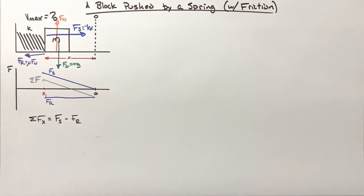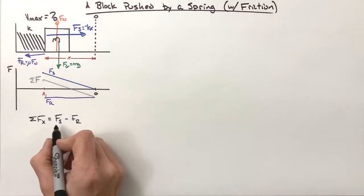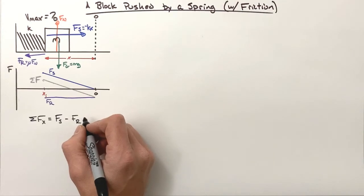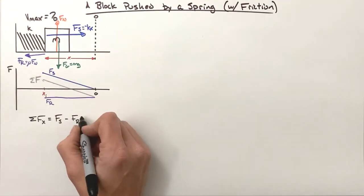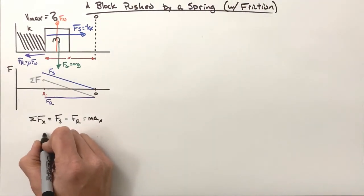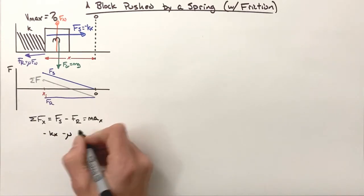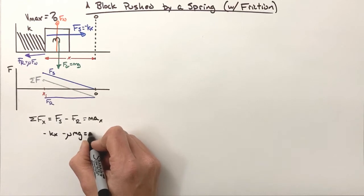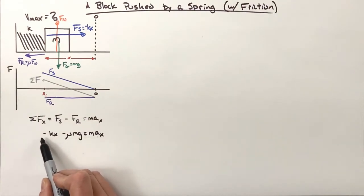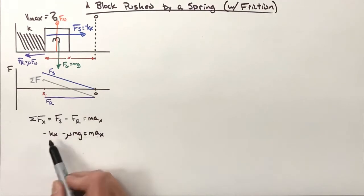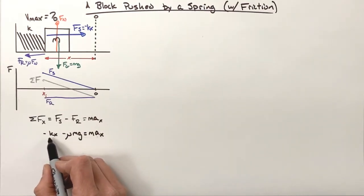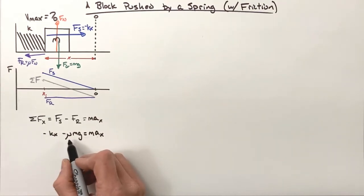Expanding this out: the sum of all forces in the x-axis equals mass times acceleration in the x-axis. The spring force is negative kx, friction is μmg, and together they equal m times a in the x-axis. It's negative because the displacement is to the left, in the negative direction, but really we have a force forward with magnitude kx and a force backward with magnitude μmg.